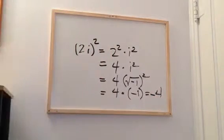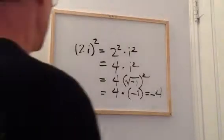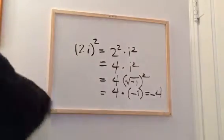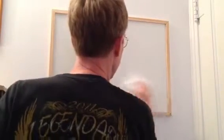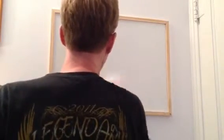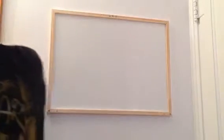So, two i, the quantity squared, equals minus four. Now, you can start playing around with these things and you'll learn a little bit about how imaginary numbers work.